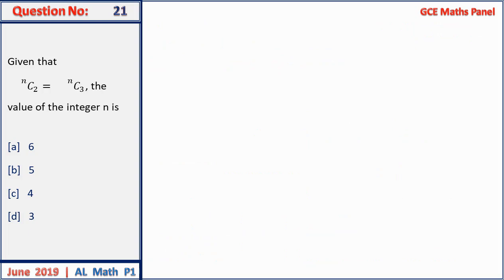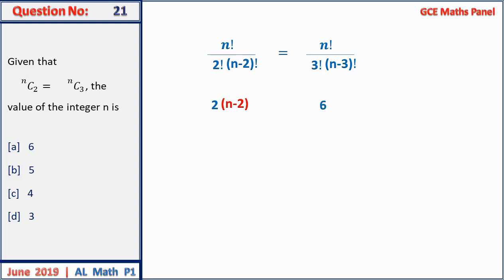Question 21: given nC2 = nC3, find the integer n. Writing the combination formulas: n!/(2!(n−2)!) = n!/(3!(n−3)!). Since numerators are equal, equating denominators: 2(n−2) = 6, which gives n − 2 = 3 and n = 5. The answer is B.